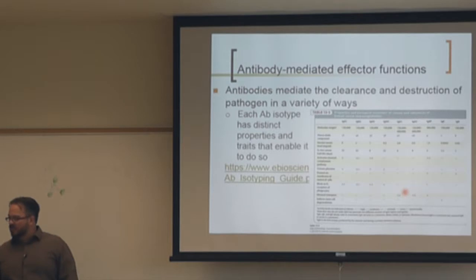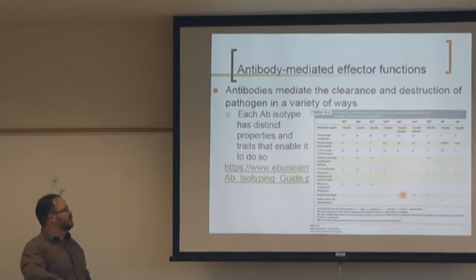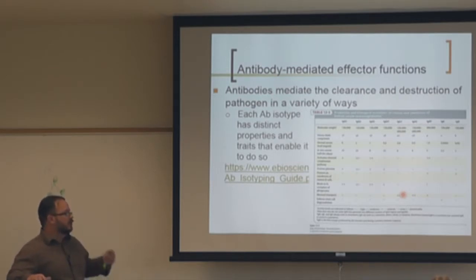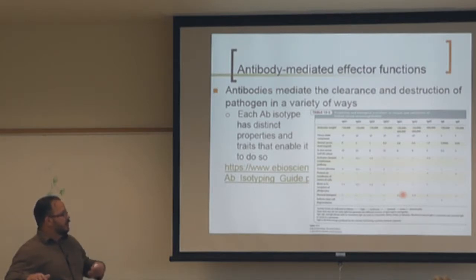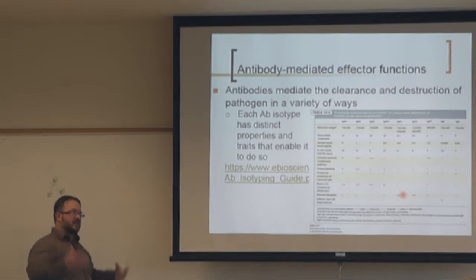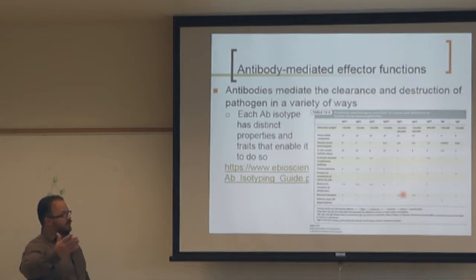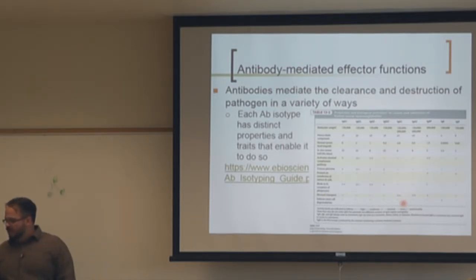The importance of different isotypes has been studied using knockout mice. For example, mice lacking IgA show increased respiratory infections. IgA is secreted and coats epithelial cells, functioning as a first responder on surfaces in contact with the environment. Knocking out IgA leads to increased infection at mucosal surfaces.